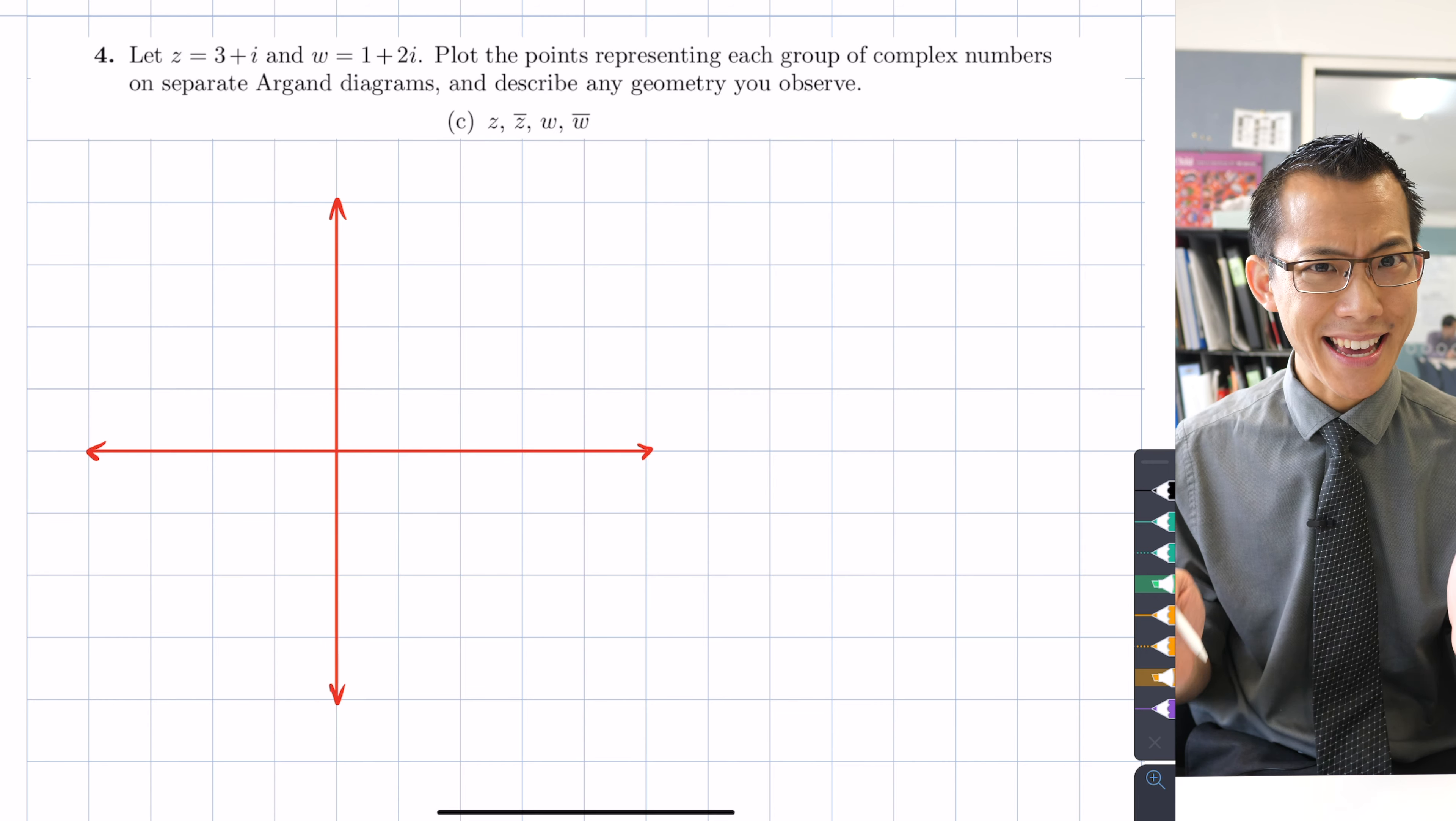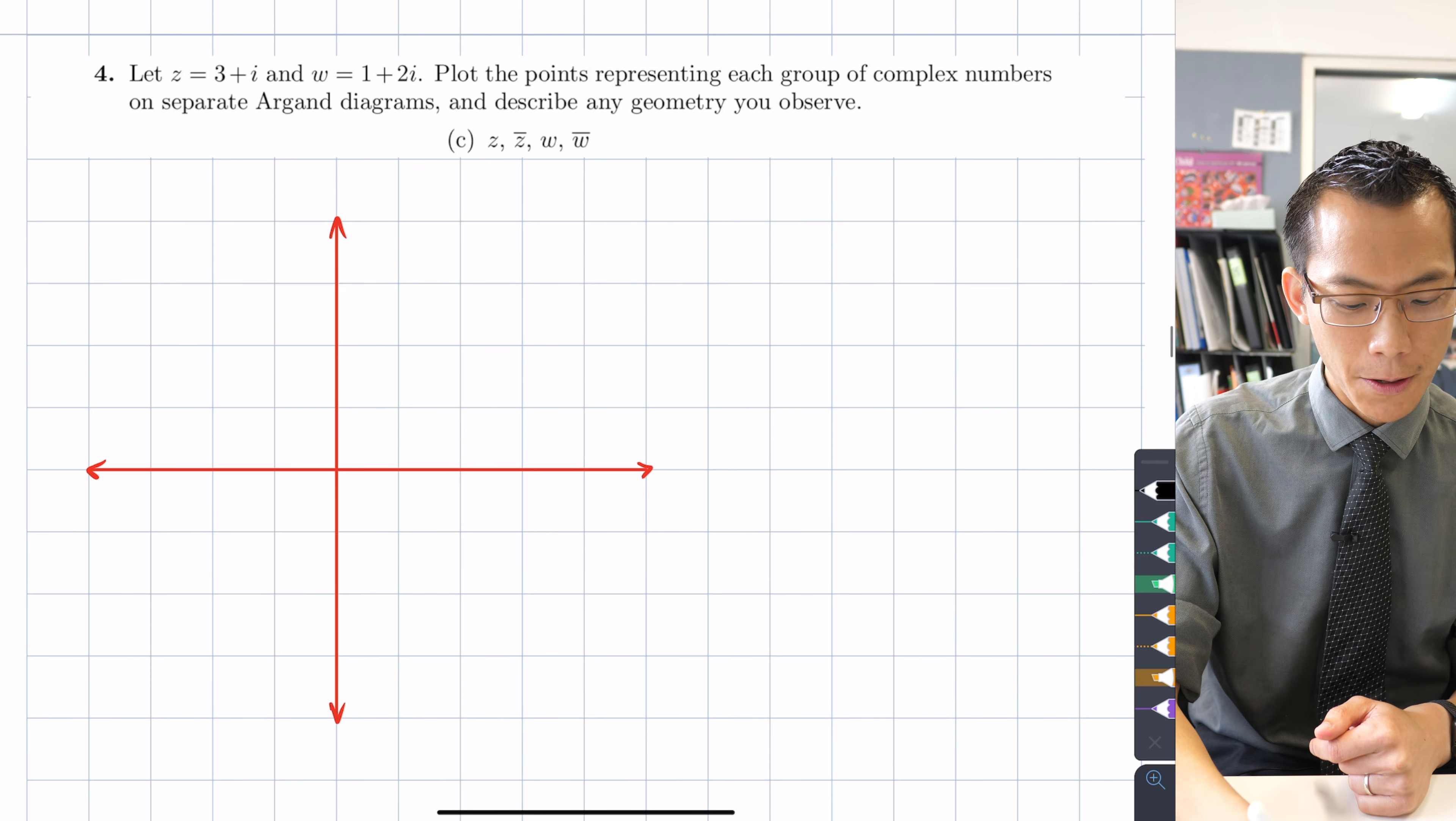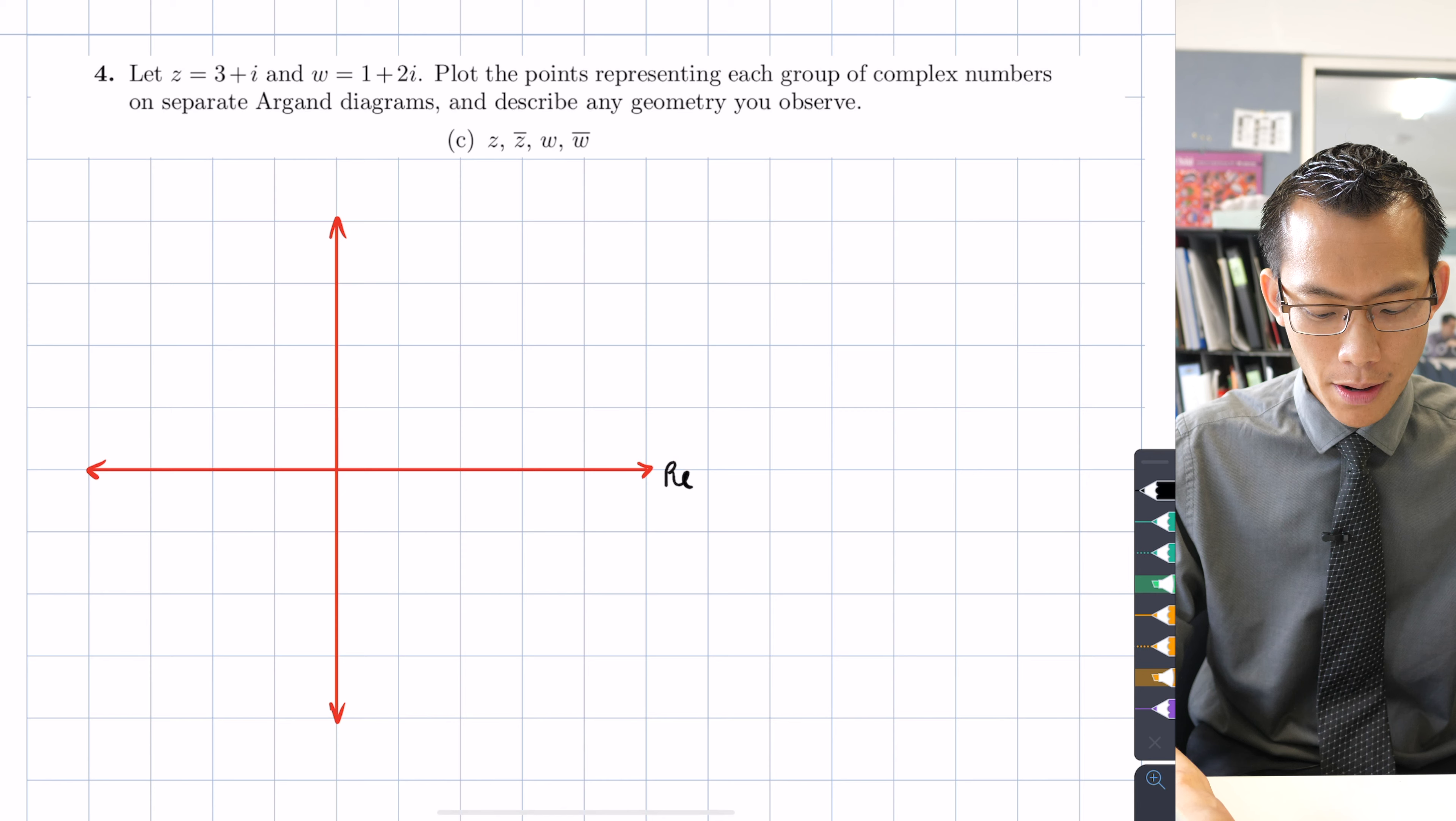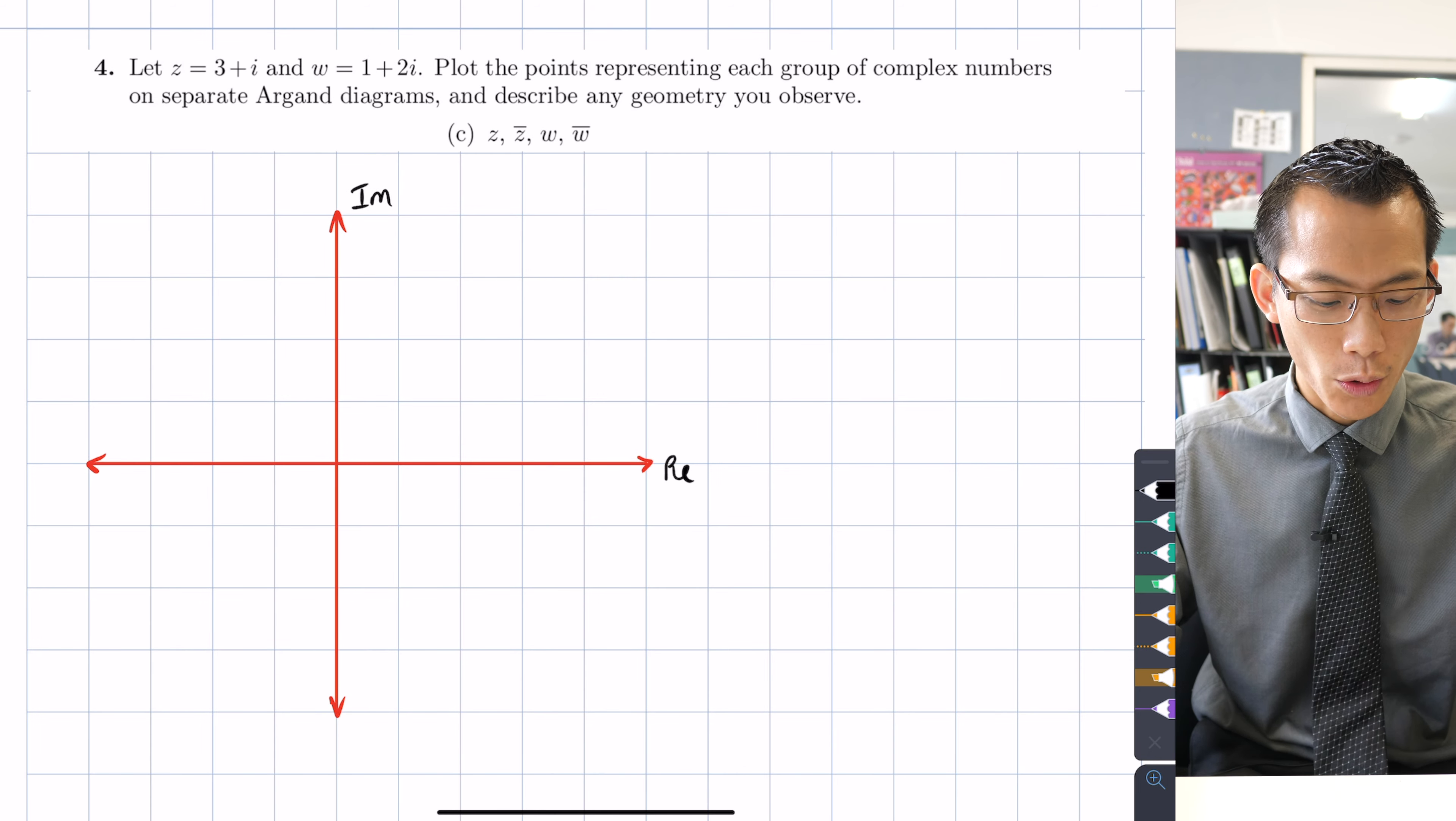For starters we need to get z and w themselves onto our Argand diagram. It's really important that we always mention we are not talking about an x and a y axis as two real numbers, we're talking about a real number which we represent as our x coordinate and then an imaginary number which we represent as our y or our vertical coordinate.